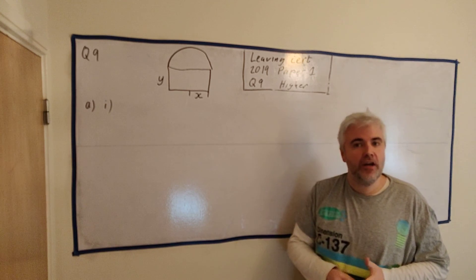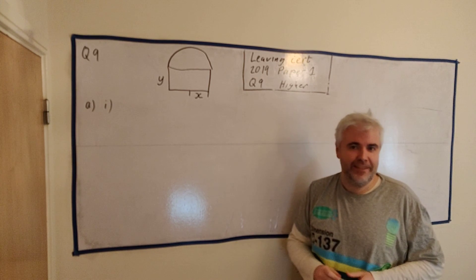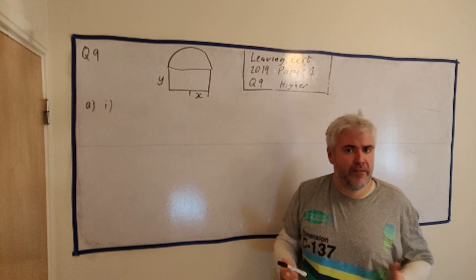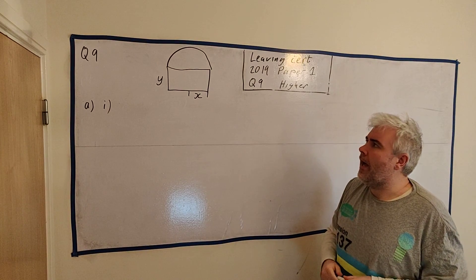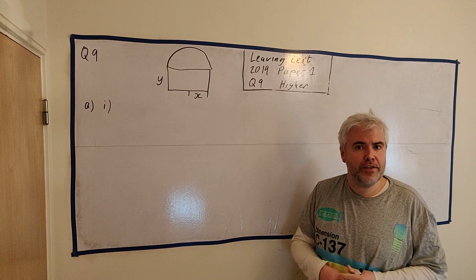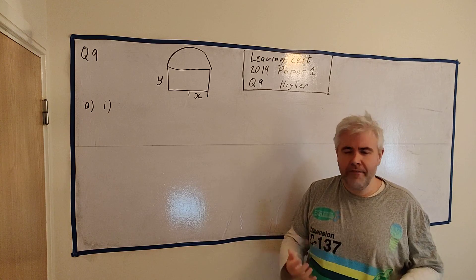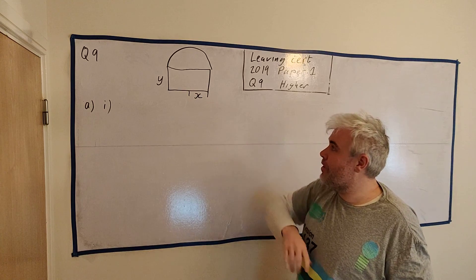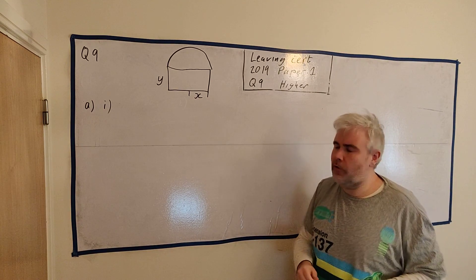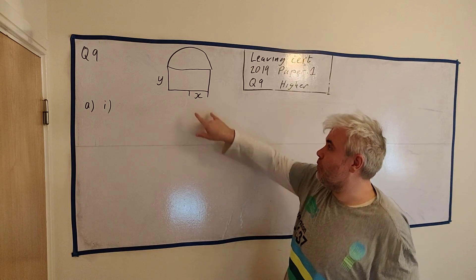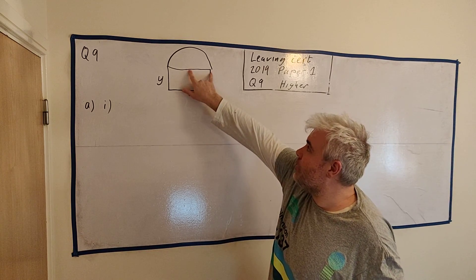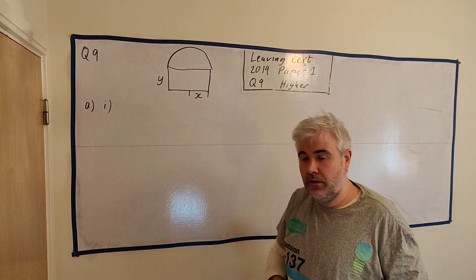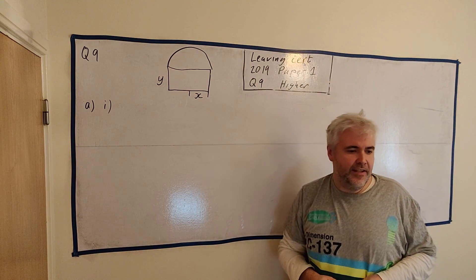Hello, this is question 9 of the 2019 Higher Level Leaving Cert paper. The question, you can find it in the comments below if you don't have it in front of you already. The question is one of those late Section B questions that can be quite awkward. There's a lot of information thrown at you, but the gist of it is this picture here. This image, I think it's a Georgian window. They're going to ask us questions about this. We have x is the radius of this semicircle, and y is the height of this rectangle.